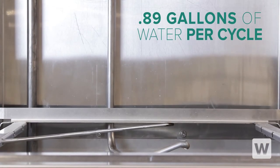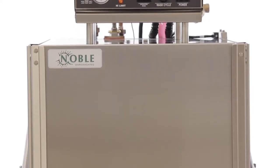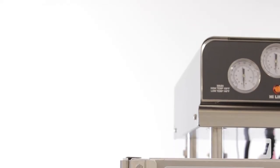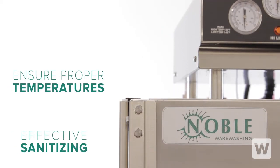This unit only uses 0.89 gallons of water per cycle, making it as environmentally friendly as it is powerful. A built-in 12.9-kilowatt, 70-degree rise booster heater and SantaSure feature ensure proper rinse water temperatures and effective sanitizing.